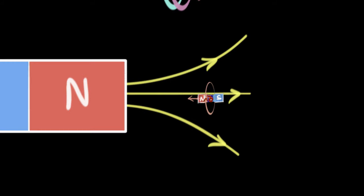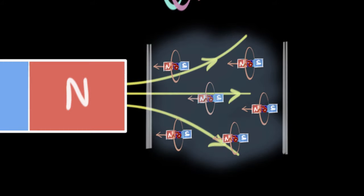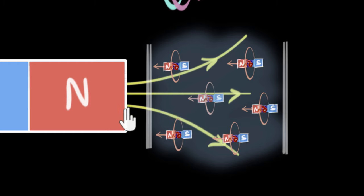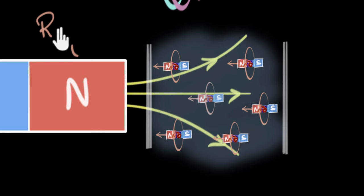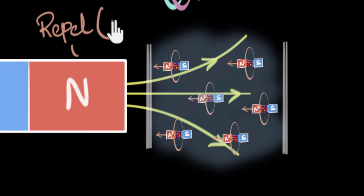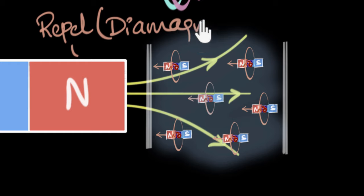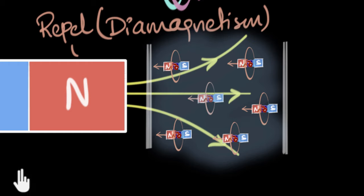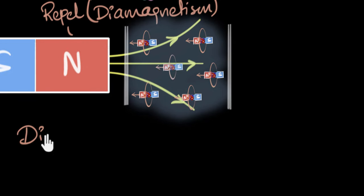The same thing is happening in the water. Water molecules are all paired up, but when you bring a magnet close, due to induction they behave like tiny magnets. As a result, the whole water gets slightly magnetized in the opposite direction and ends up repelling the magnet. This phenomenon, where atoms start repelling the magnetic field due to induction, is what we call diamagnetism, and such materials like water are called diamagnets.